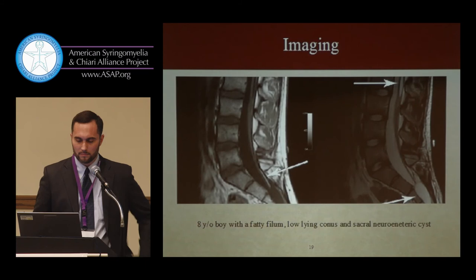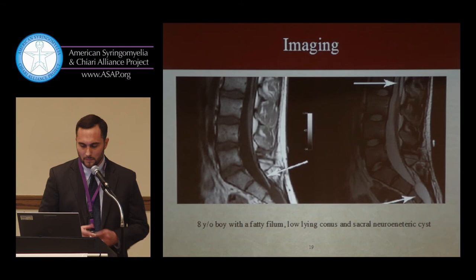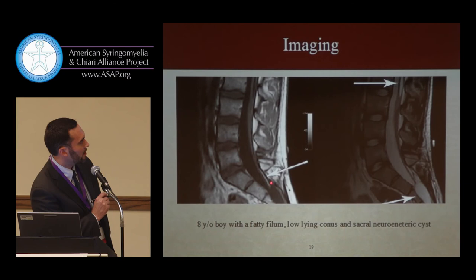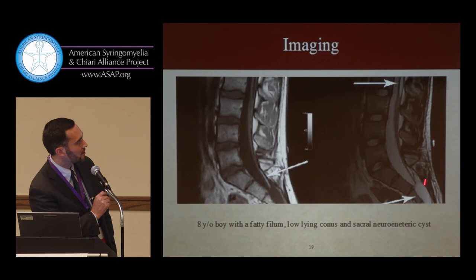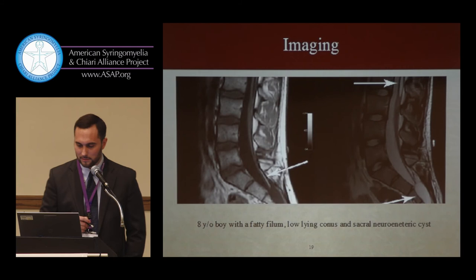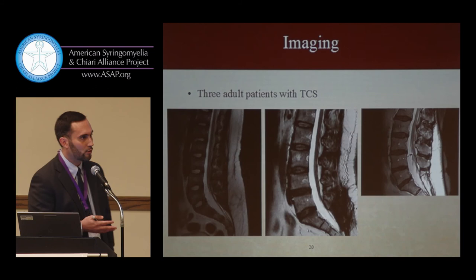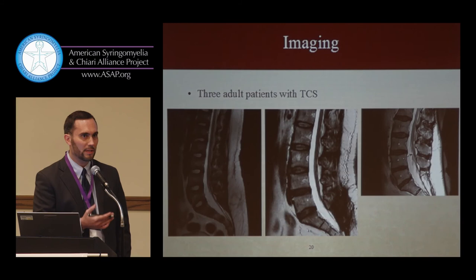Here's an MRI of an eight-year-old boy with a fatty filum — the arrow indicates the fatty filum — and a low-lying conus. On a T2-weighted image, you can also see he has a neuroenteric cyst and some syringomyelia. These are MRIs for three separate adult patients, each showing a low-lying conus. If you look at the rest of the MRIs, you can see various degrees of bone abnormalities associated with it.